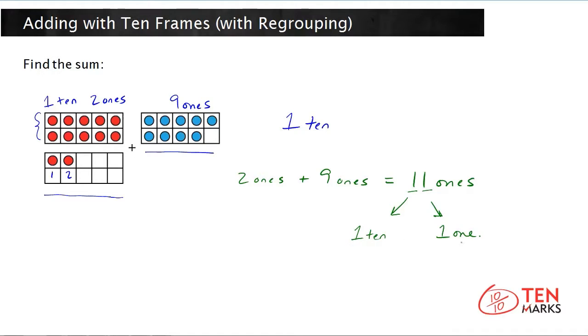And add the one ten and the one one to the one ten you got from the first addend. So the total addition is one ten from the first addend, plus one ten from regrouping, plus one one from regrouping.